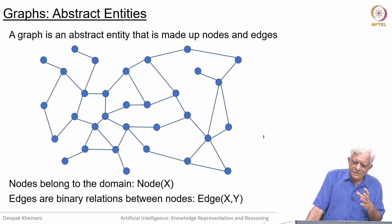We can say that there is an edge between, if this is node X and this is node Y, then there is an edge, a binary relation between these nodes X and Y.